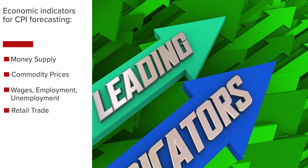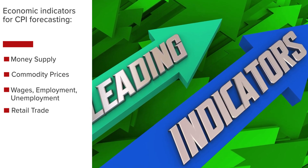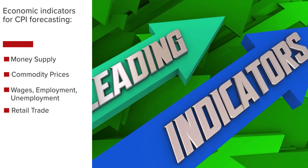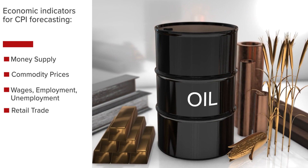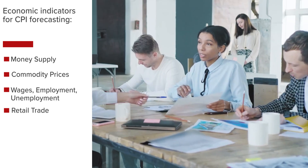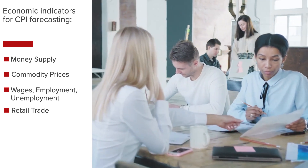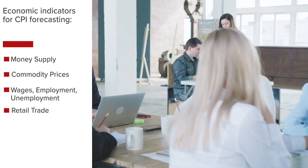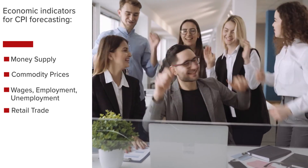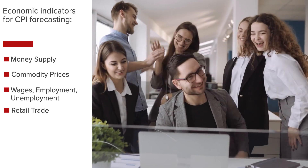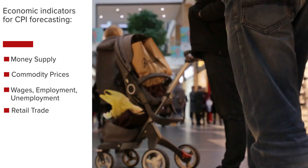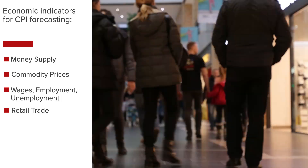To forecast CPI, we examine the growth of the money supply to see if more money in the system without commensurate growth in productivity increases the risk of inflation. As inputs to consumer goods and services, daily commodity prices can be used by forecasters to estimate future prices. Wages, employment, and unemployment provide information on whether the labor market is tight. High wages alongside a tight labor market can push businesses to increase prices and trigger higher and more resistant inflation. Furthermore, retail trade can be used to measure transactions in the economy and to see how hot demand is.